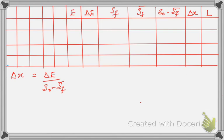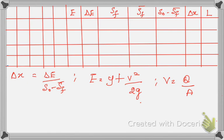To find ΔE I need the specific energy E = y + V²/(2g), which requires V = q/A. I also need R for each depth to calculate S_f. The formula is V = (1/N)·R^(2/3)·S_f^(1/2), from which S_f can be found. We set up a tabular column with columns for y, A, P, R, V, E, S_f, S̄_f, Δx, and L.